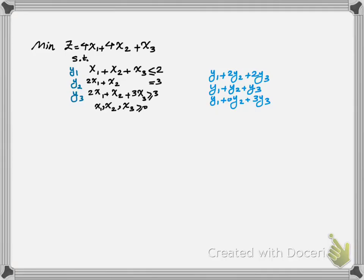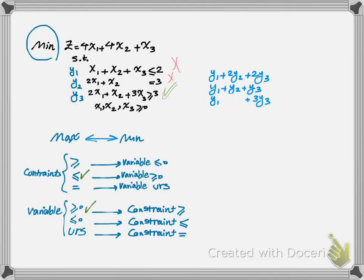Now I have to define the sign for the decision variables. For a min problem, the standard format is greater than or equal. The other two constraints do not have the standard format, so only y3 associated with the third constraint is going to be greater than or equal to 0. For the other two, we follow the table from earlier. The first constraint is less than or equal in a min problem, so y1 is going to be negative, or non-positive. For y2, the constraint is an equality, so y2 is unrestricted in sign. All primal variables are greater than or equal, so all dual constraints are less than or equal.